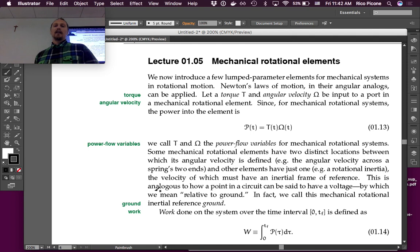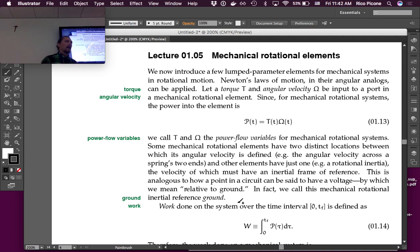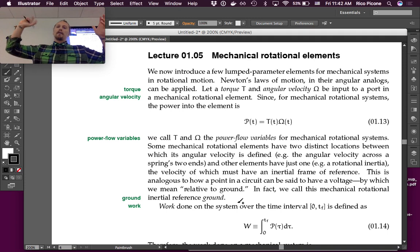Some mechanical rotational elements have two distinct locations between which its angular velocity is defined. We have these torsional springs that we'll talk about in a few minutes, but on one side of the torsional spring you could have one angular velocity, and the other side you could have a different angular velocity.